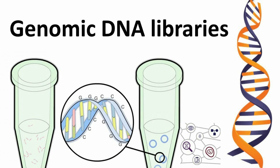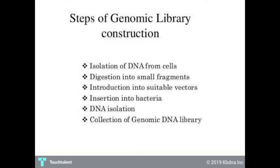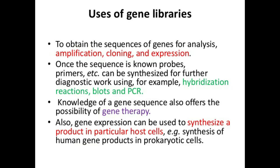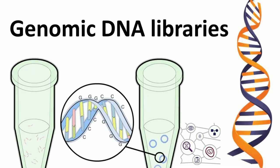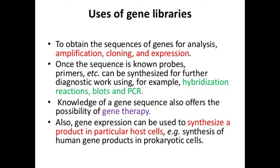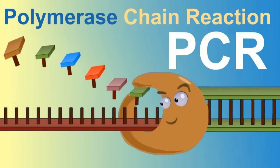PCR is very specific — the target DNA sequence can be less than one part in a million of the total DNA sample. This means that a single gene or smaller piece of DNA among all the human genes can be amplified and copied using PCR. PCR takes its name from DNA polymerase, the enzyme that carries out DNA replication in a cell. It is considered a chain reaction because DNA polymerase will carry out the replication over and over again until there are millions of copies of the desired DNA.